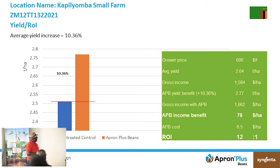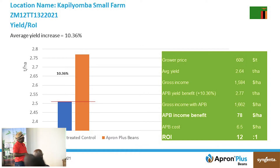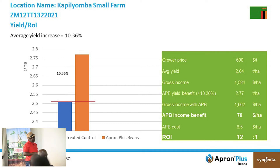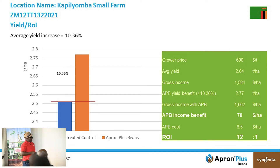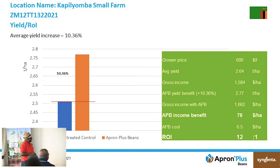The average yield of 2.64 for the untreated gives a gross income of $1,500 per hectare. Whilst the one treated with Apron Plus Beans showed 10.3–10.7% more yield than the untreated one — a yield of 2.7 tons per hectare. The gross income with Apron Plus Beans was $1,662 per hectare, so the income benefit is $78 per ton. The cost per hectare is around $6.50.